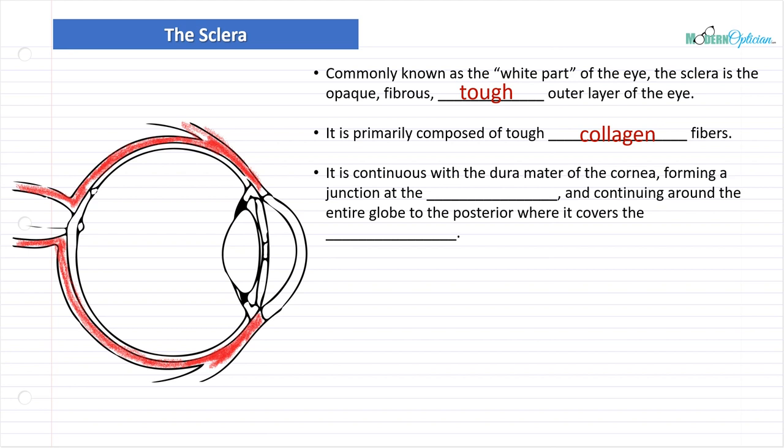It's continuous with the dura matter of the cornea. So they kind of blend in, forming a junction at the, we talked about this, limbus, and continuing around the entire globe to the posterior where it covers the optic nerve. So all the way around.